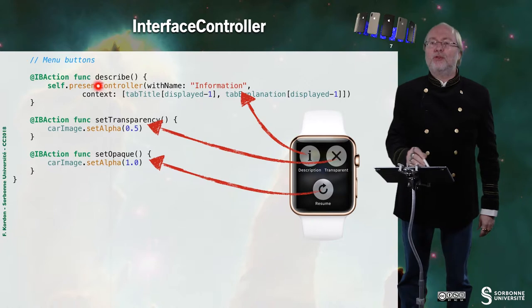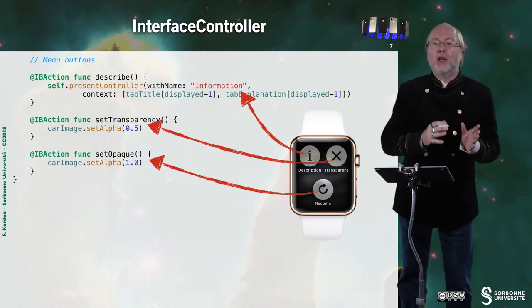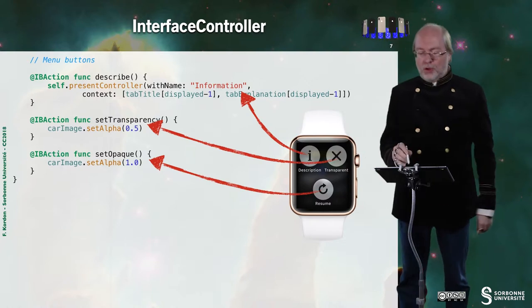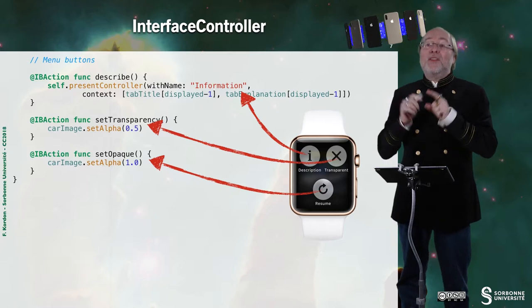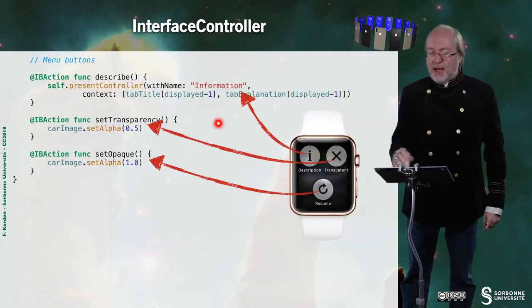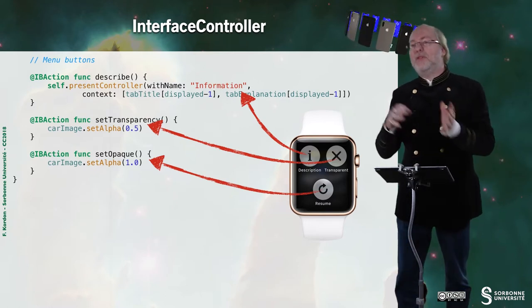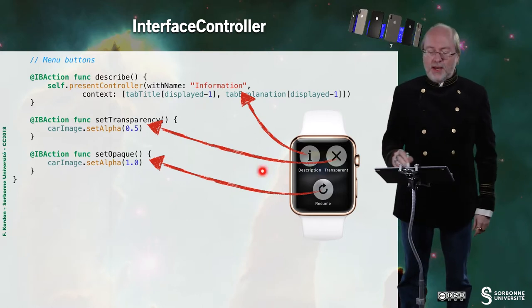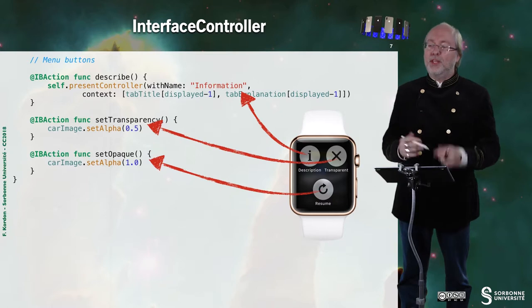The menu button is associated to a describe function that pushes a new controller. I specify that I take the storyboard called 'information', which is associated to the information controller class. I pass as context the name to put on the first label and the text to put on the second label. Another menu button changes the transparency, and the last one restores the transparency.